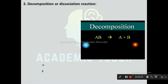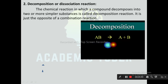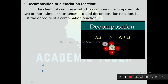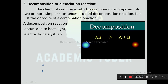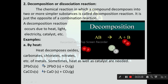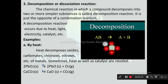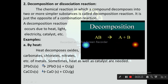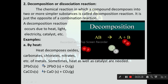Next one is decomposition or dissociation reaction. The chemical reaction in which a compound decomposes into two or more simpler substances is called decomposition reaction. It is just the opposite of combination reaction. A decomposition reaction occurs due to heat, light, electricity, catalyst, etc. For example, by heat: 2PbO₂ (heat) → 2PbO + O₂; CaCO₃ (heat) → CaO + CO₂.